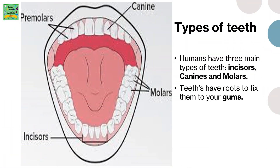Types of teeth: humans have three main types of teeth — incisors, canines, and molars.